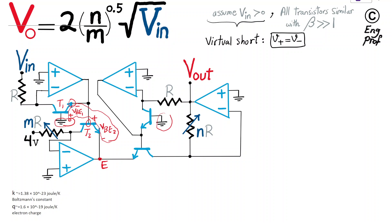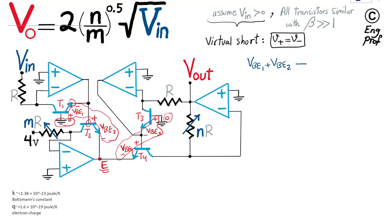A similar situation exists on the right side. We have virtual ground at 0 volts. From there, we have VBE3 for transistor T3, and then in series, VBE4 for transistor T4. Again, these two base-emitter voltages are in series cascade from ground to common node E. Because of this observation, I can say: VBE1 + VBE2 equals VBE3 + VBE4.